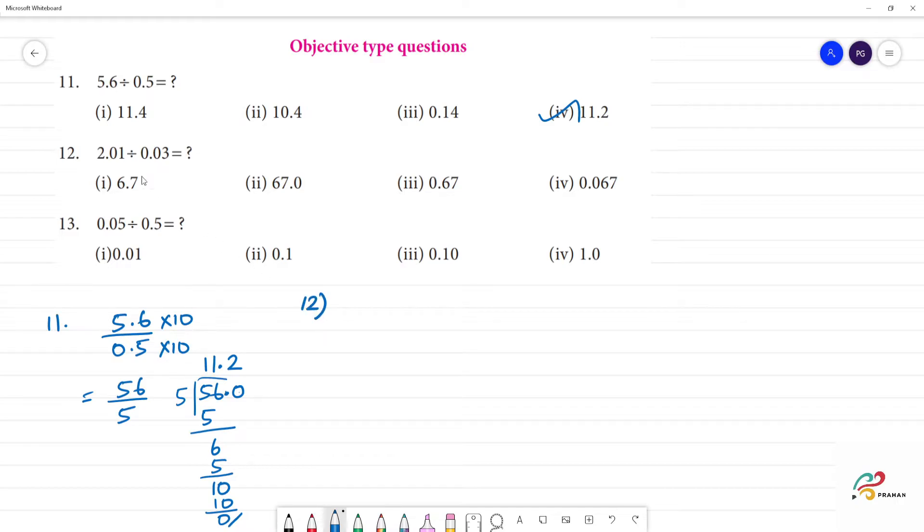Next, 12th one. 2.01 divided by 0.03. For decimal, from point, multiply by 100, multiply by 100. Now what do we do?